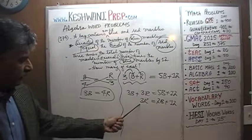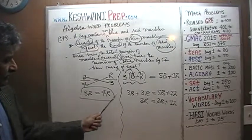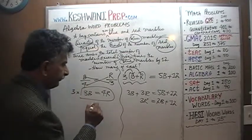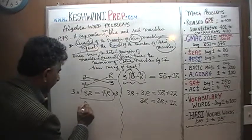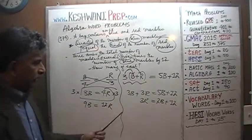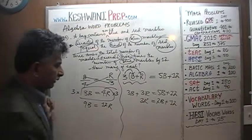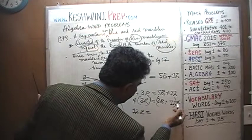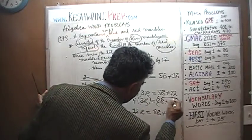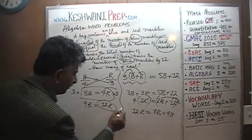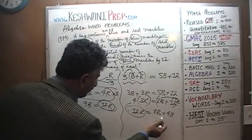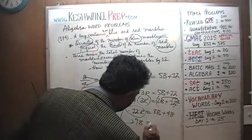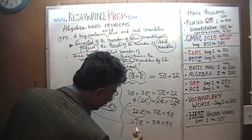The complication is that here we have 3R and from equation one we have 4R. If we can make the coefficient of R the same, we can substitute. Multiplying equation one by 3 gives 9B = 12R. Multiplying the second equation by 4 gives 12R = 8B + 48. Since both expressions equal 12R, we substitute: 9B = 8B + 48. Subtracting 8B from both sides gives B = 48.